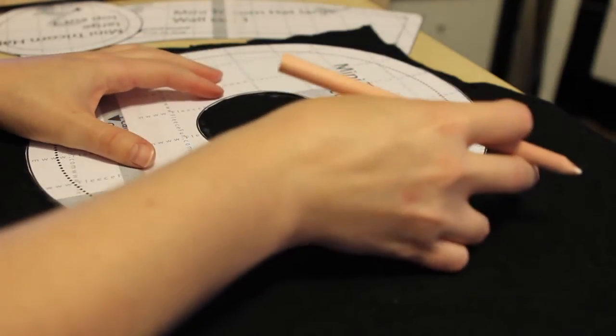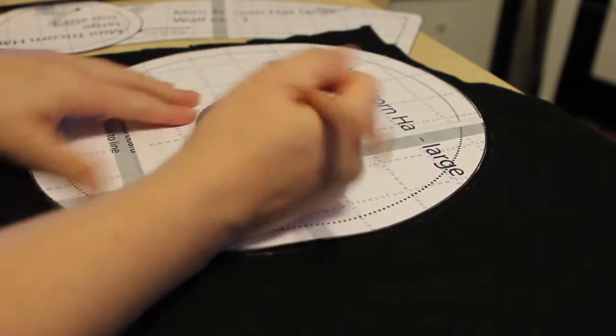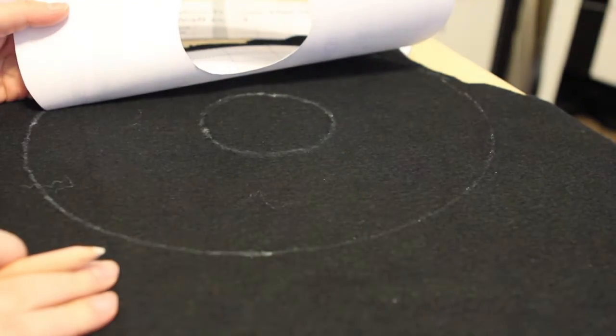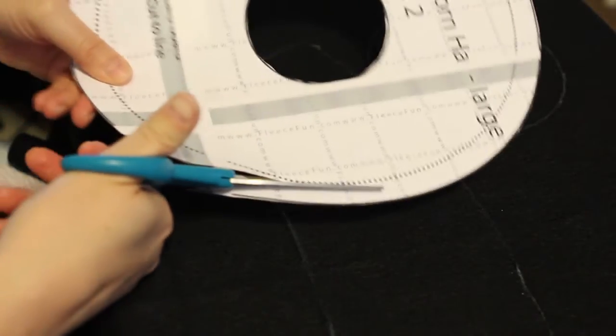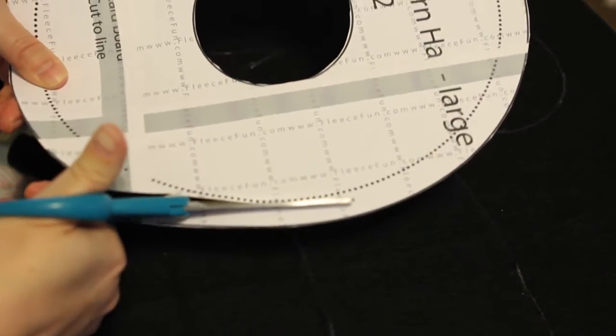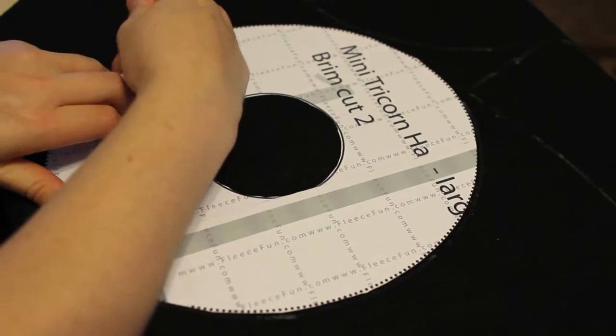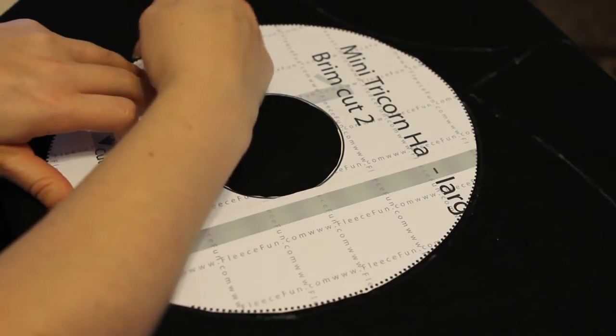Be sure to trace the brim twice, once on the solid line. Then cut down to the dotted line and trace again. Be sure to also trace the hole in the center.